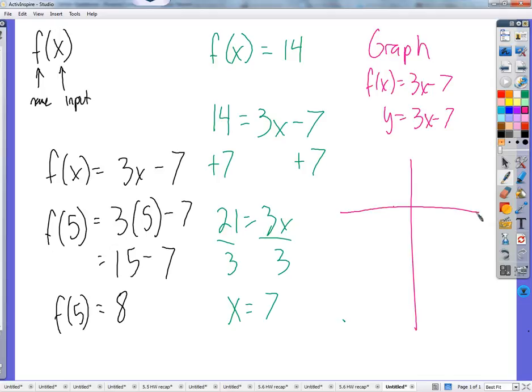So whether you think of it as graphing f of x equals 3x minus 7 or y equals 3x minus 7, how do you do that? It's just like you go on the y axis and go down 7. Go down 7 on the y axis, 3, 4, 5, 6, 7, because that's our y intercept. And then up 3 and over 1. Up 3 and over 1. Up 3 over 1. That's our slope. There we go.